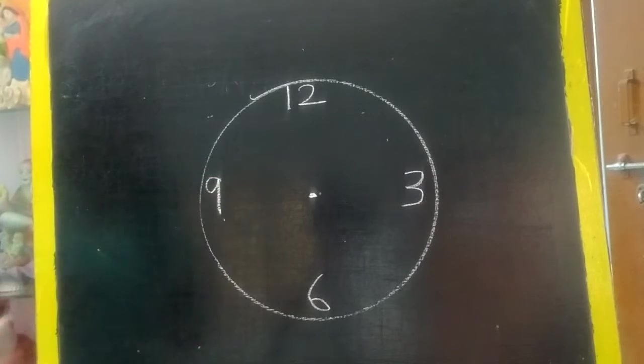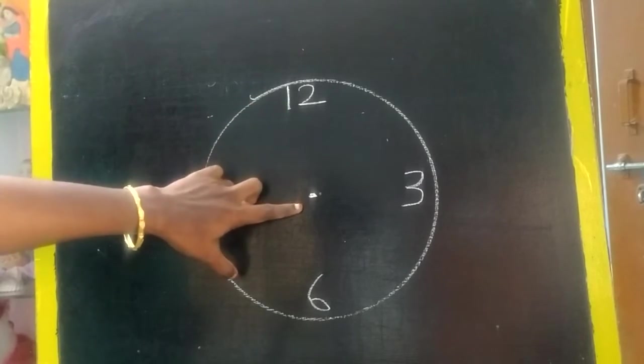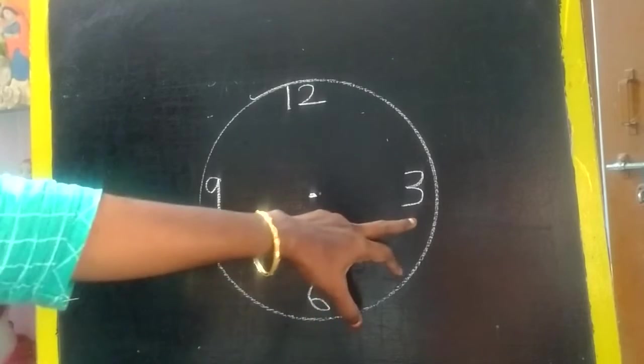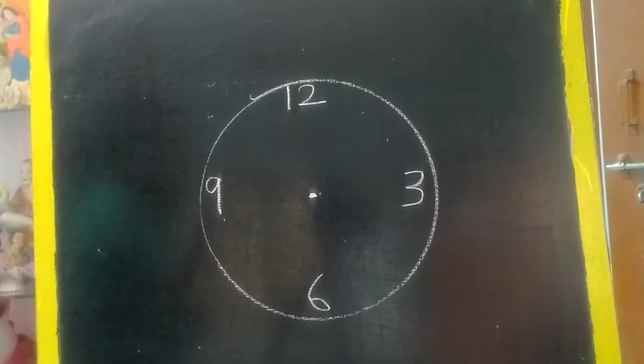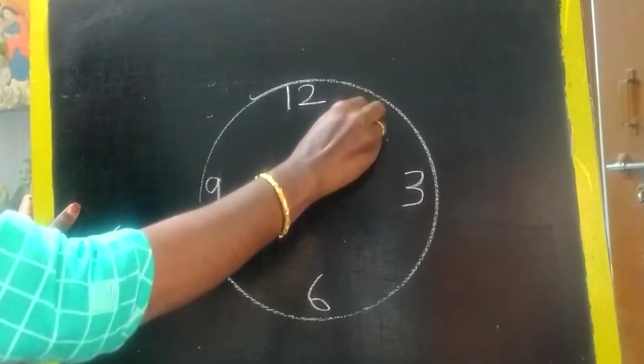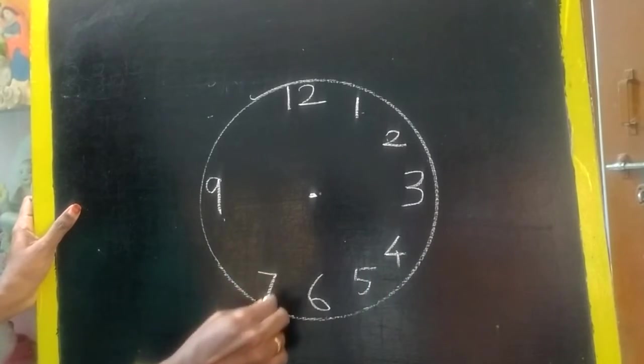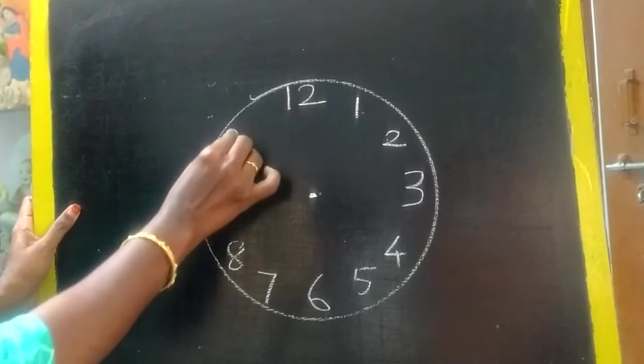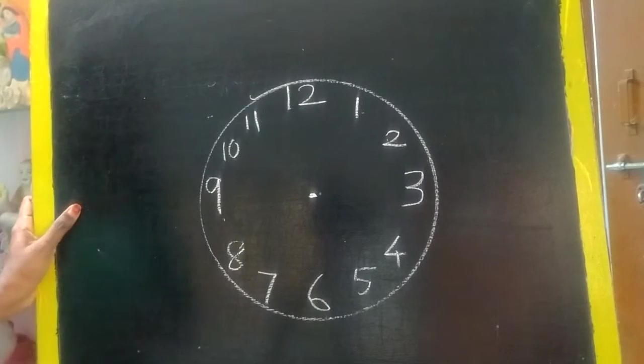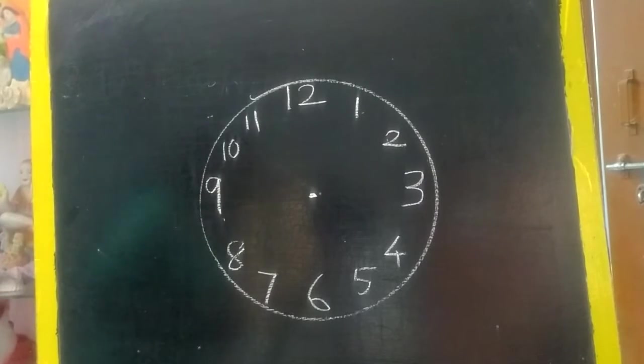So here 12 first, midpoint top 12, bottom 6, right side 3, now 9. Next is you have to write the numbers from 1, 2, 3, but how to maintain equal space? 1, 2, like this you have to maintain equal space. 10, 11, like this you have to write. Can you see? It's looking like a clock.